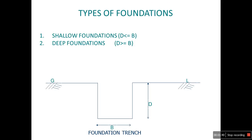Generally, the types of foundation can be classified into two based on the depth and the width of the foundation. The first one is the shallow foundation, in which depth is less than or equal to breadth. The second one is the deep foundation, where the depth is greater than or equal to breadth. From this figure, it is clearly seen that from the ground level, T represents the depth and B represents the width.